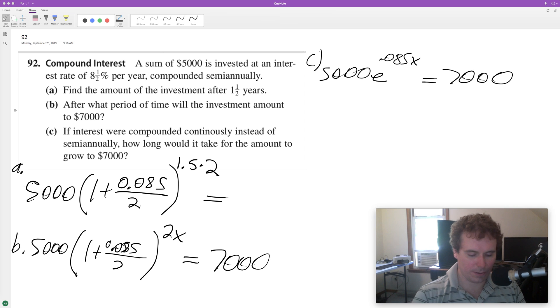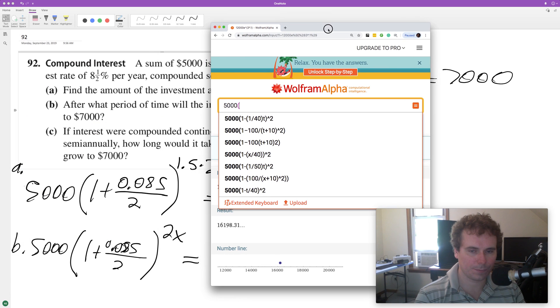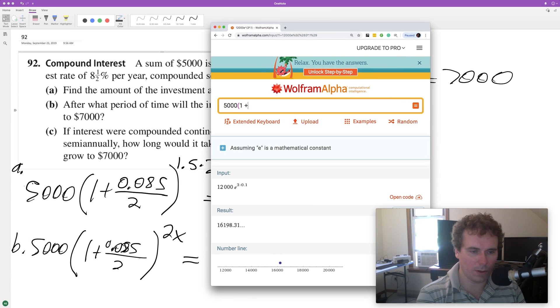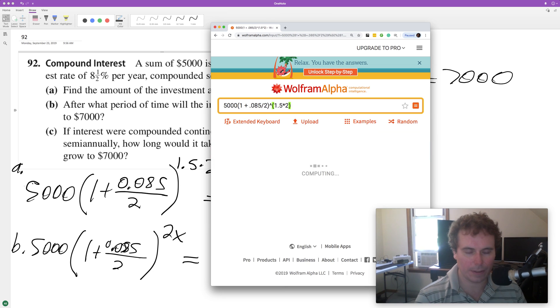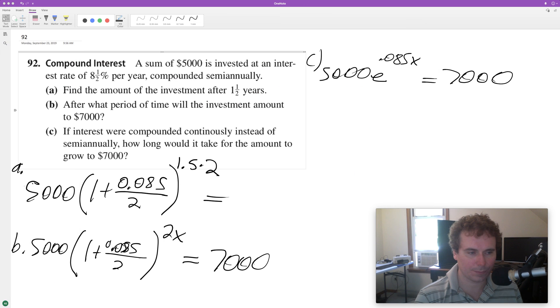For the first question, we get $5000 times 1 plus 0.085 divided by 2, raised to the 1.5 times 2, which gives us $5,664.98.